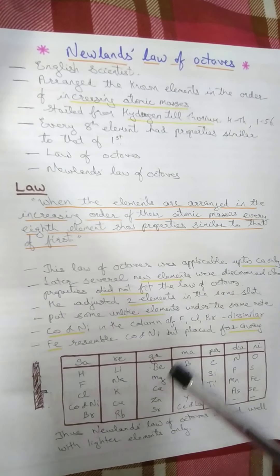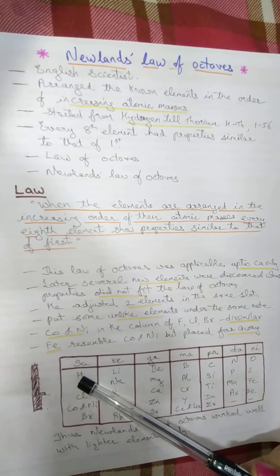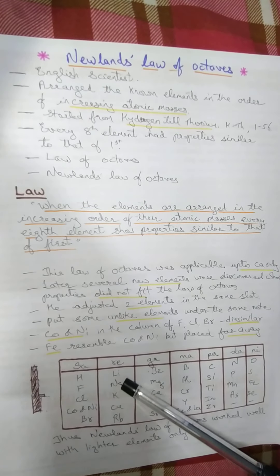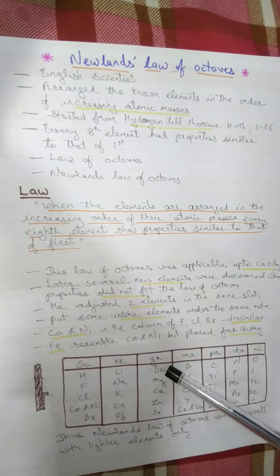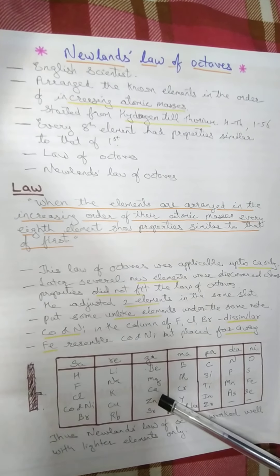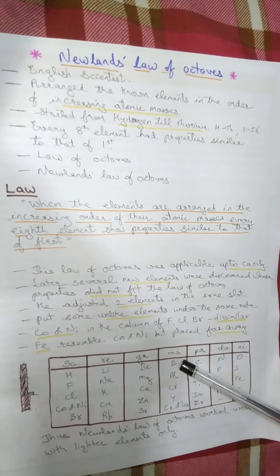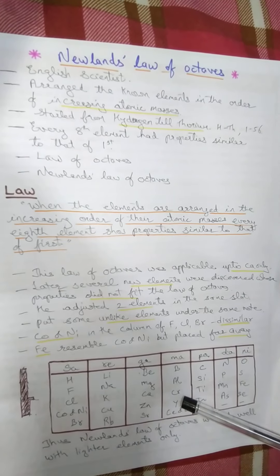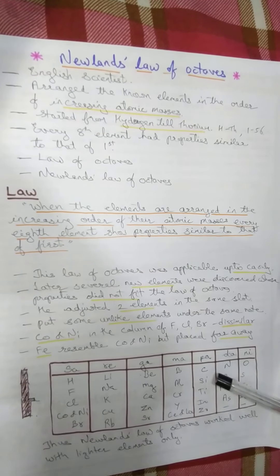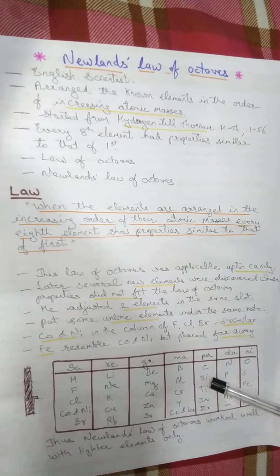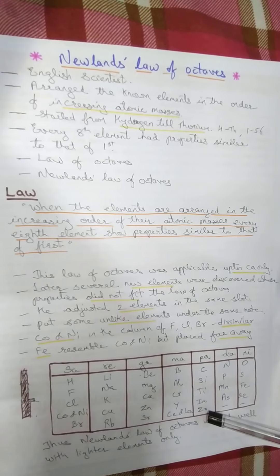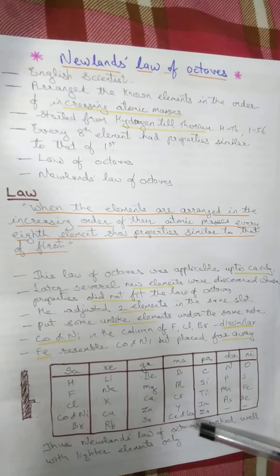Again, hydrogen, fluorine, chlorine were similar; lithium, sodium, potassium were similar; beryllium, magnesium and calcium were similar. But further, boron and aluminum were similar but chromium did not match. In the same way, carbon and silicon were similar but further did not match. Hence, his law got failed.